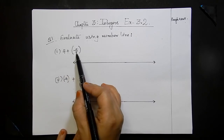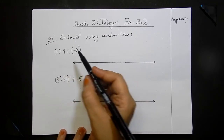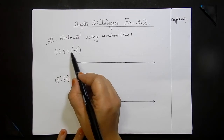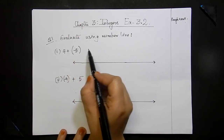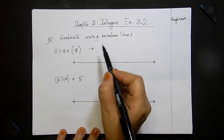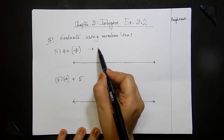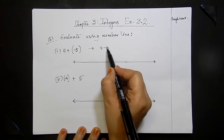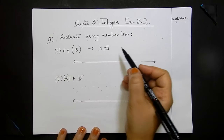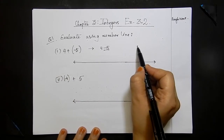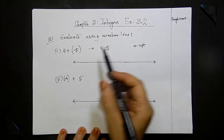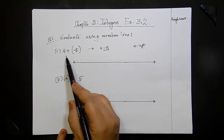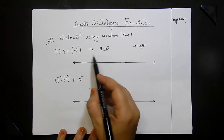They've asked you to find out the value of 4 plus (minus 5) using a number line. When there is a plus sign outside the bracket and a minus sign inside the bracket, that means we are actually going to subtract. So this is equivalent to 4 minus 5. When it is minus 5, in order to decrease we move towards the left, so for subtraction we move towards the left.